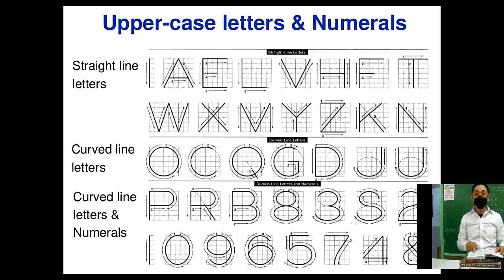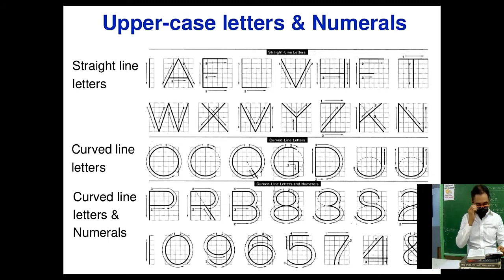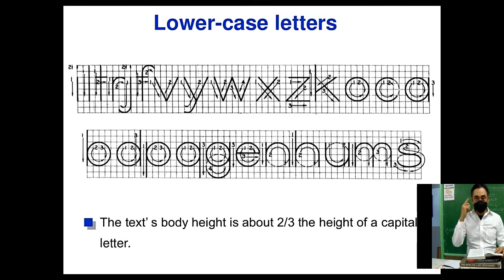For the lettering and numbering plate, you will use cartulina so that you can erase mistakes. If you use bond paper, there is no margin for error because it is too thin and you cannot erase if you make a mistake. Take note of the strokes of the letters and numerals — the uppercase and lowercase letters — and identify which letters have straight lines and which have curves.